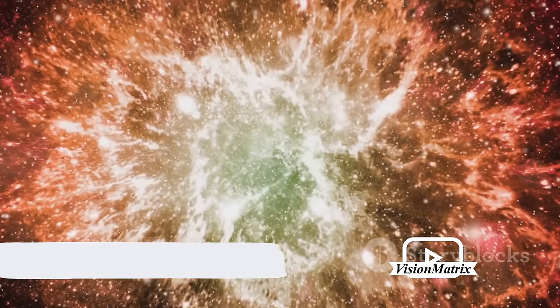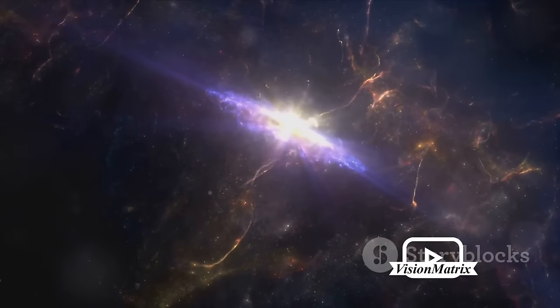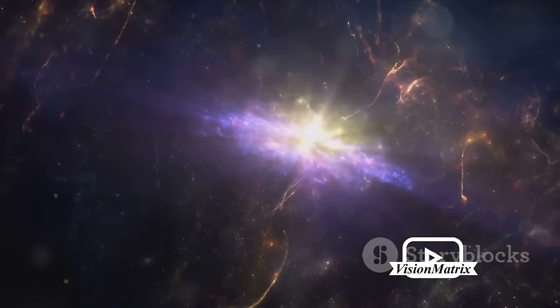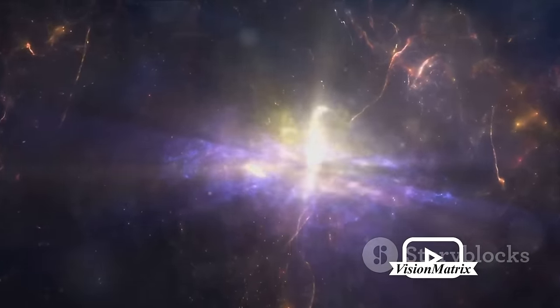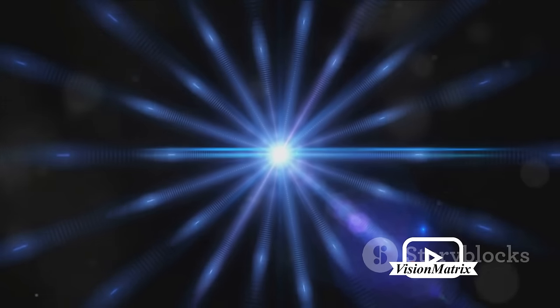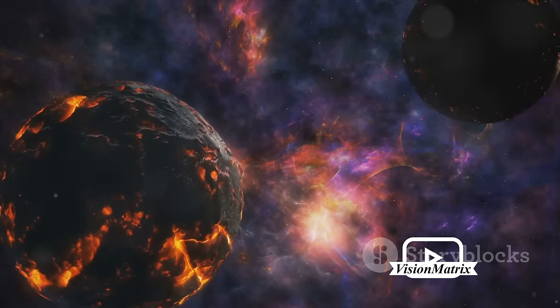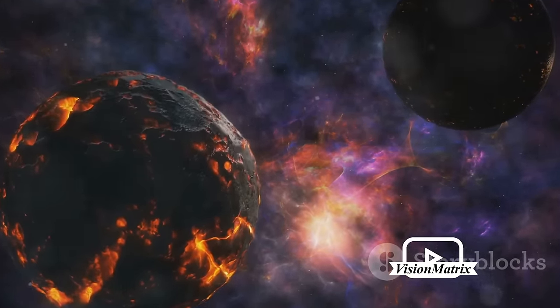Now let's take it a step further. Some neutron stars spin at a rapid pace, emitting beams of radiation from their magnetic poles. These are what we call pulsars. Like cosmic lighthouses, they emit signals at regular intervals, painting a rhythmic picture in the vast canvas of the cosmos. These cosmic phenomena, though violent, contribute significantly to the universe we live in.